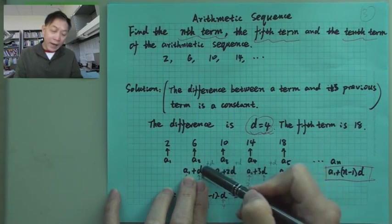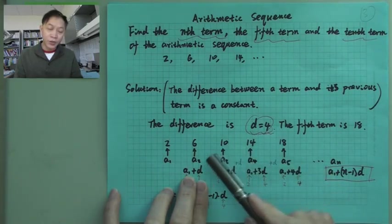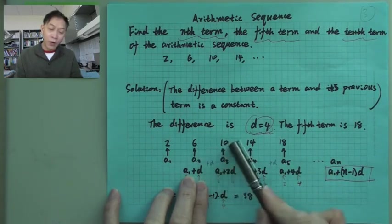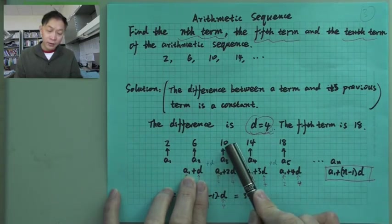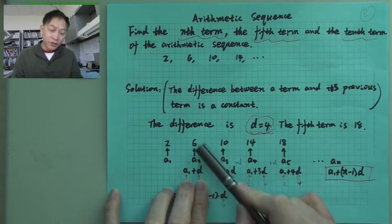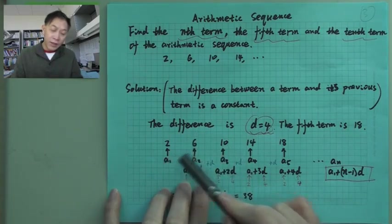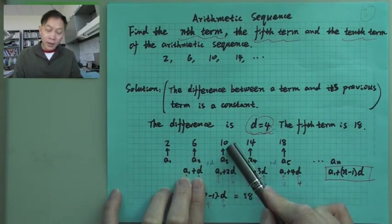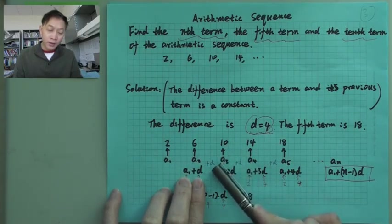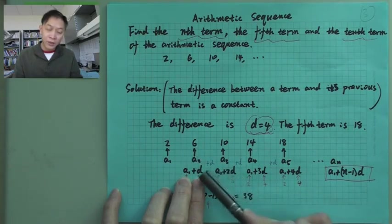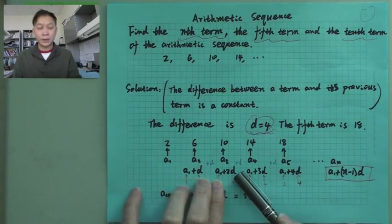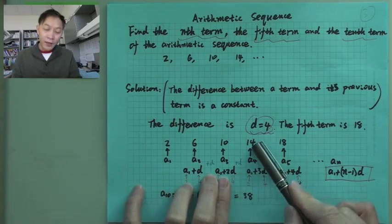And then the following term, you add another D. You see, 6 add 4—add a D—you'll get 10. So previously, the first term is... the second term is the first term add D. The third term is the second term add another D, so you have 2 Ds.